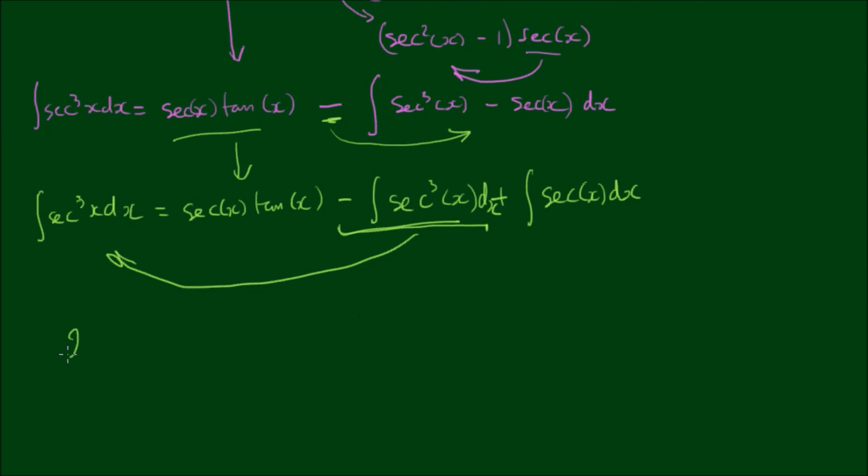So what this gives us is 2 times the integral of sec³(x) on the left hand side is equal to sec tan plus the integral of sec(x).